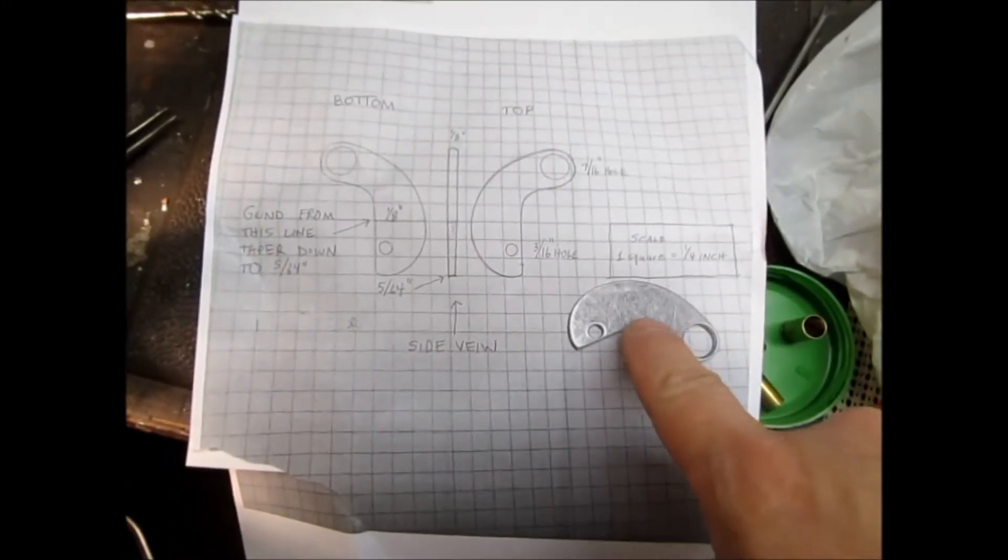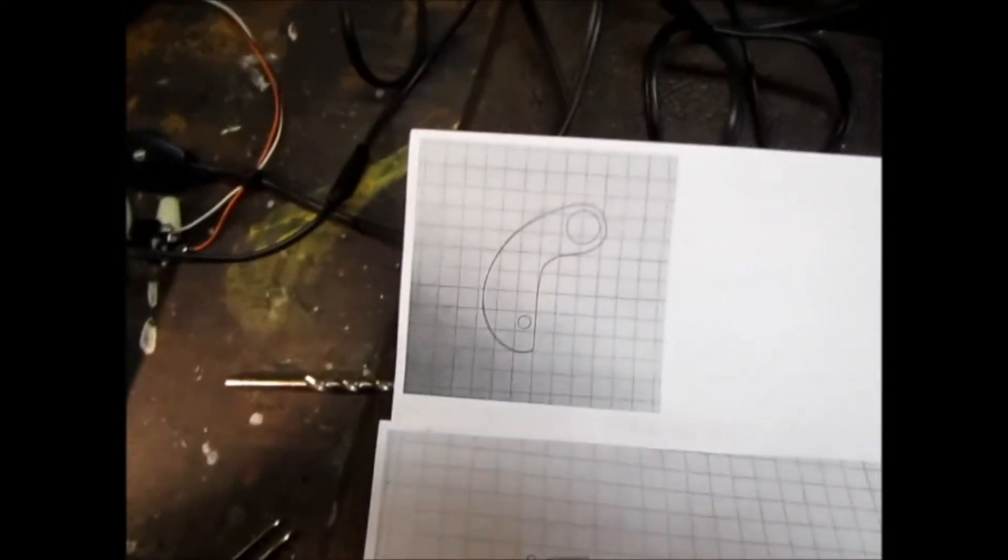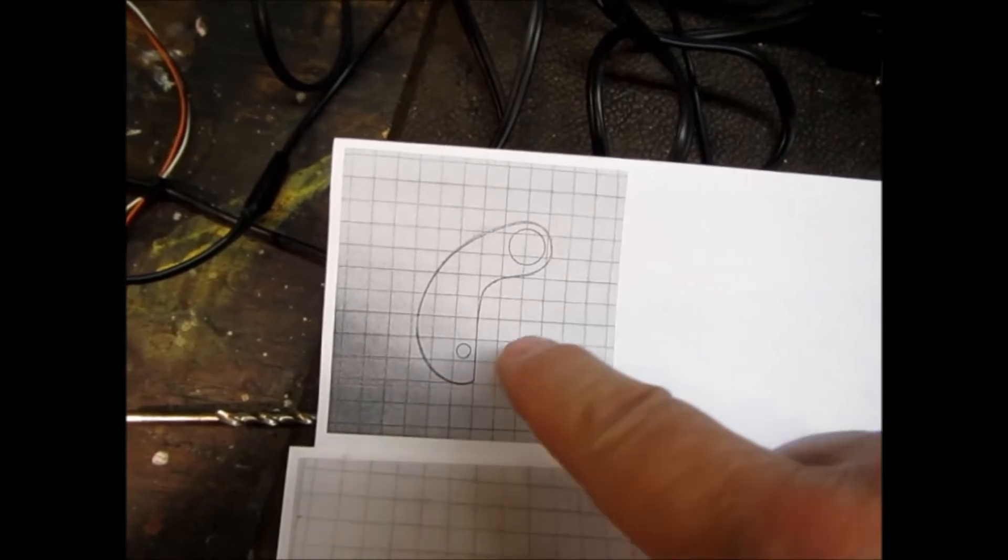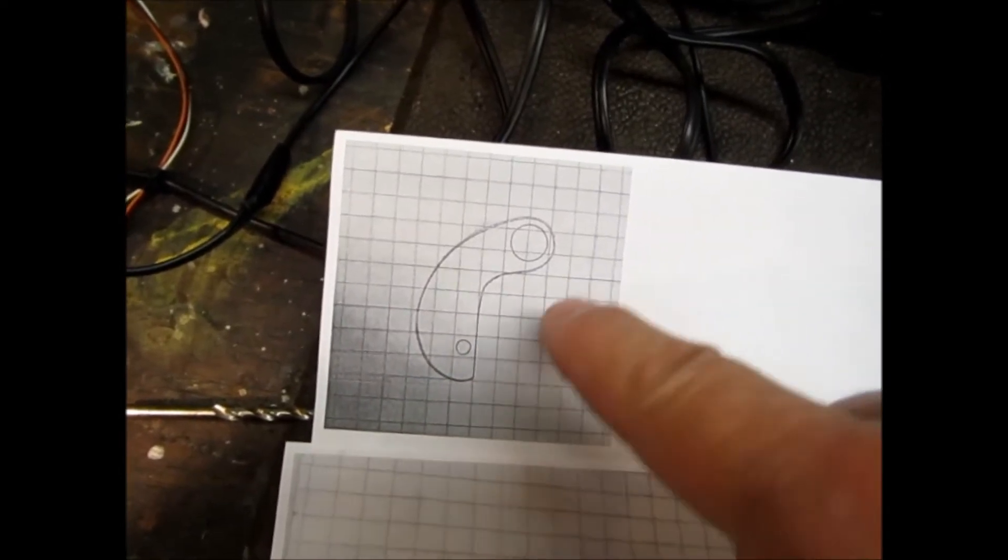He made his part out of aluminum here. He also put a picture out there that you could print to scale, so I printed this to scale. That's one quarter of an inch per box here.